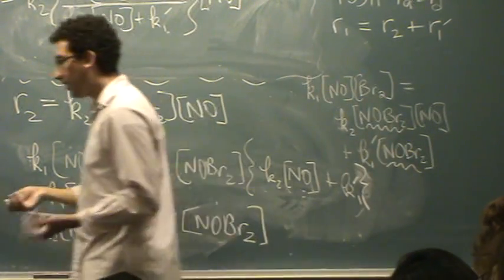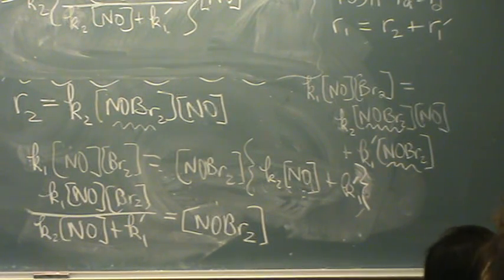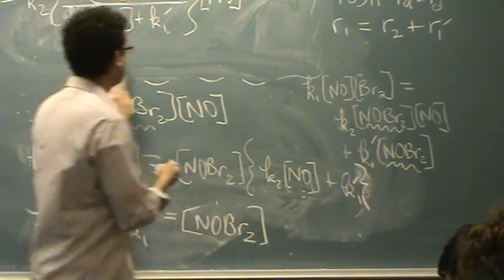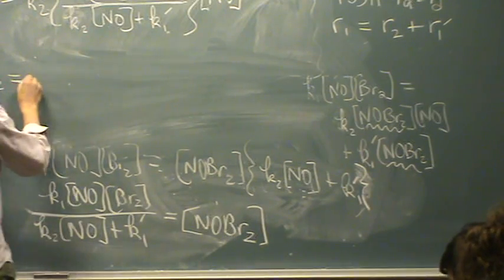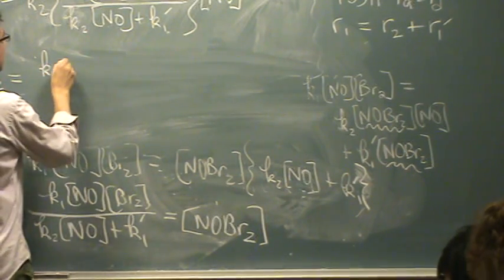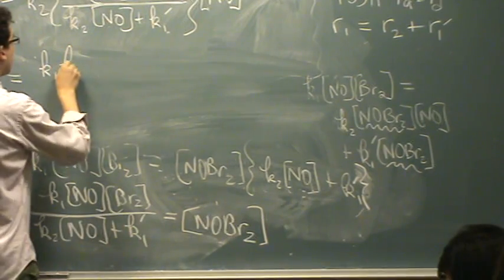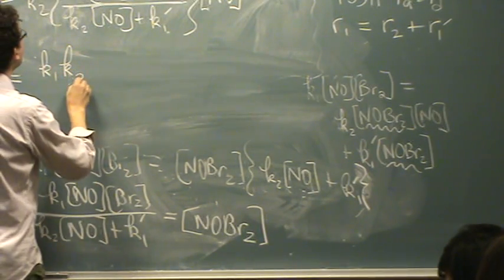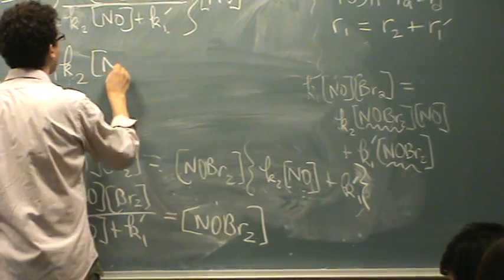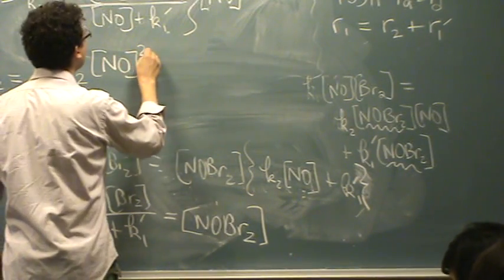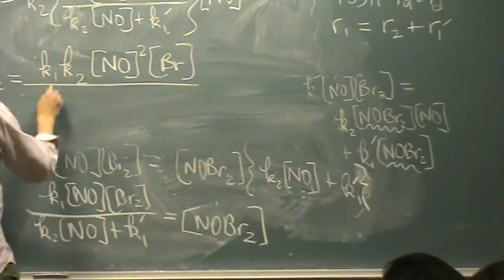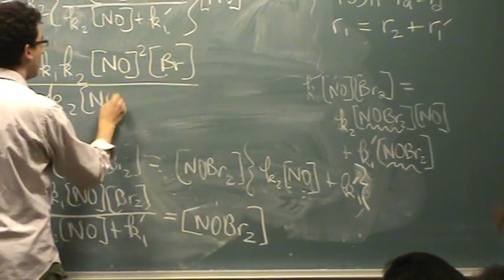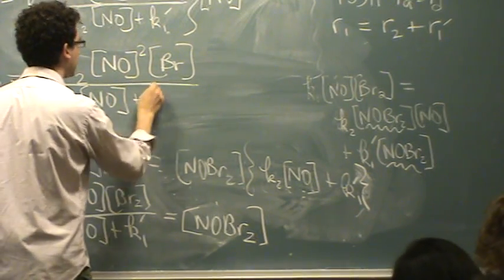So, now you should see all I did is stick the thing in braces in for the intermediate. Now, let's just simplify a little bit. So, to simplify R2 equals K1 times K2 times NO squared times BR all over K2 NO plus K2.